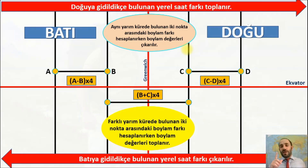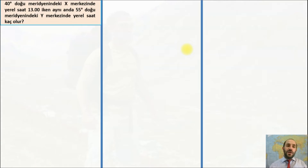Tarih değiştirme çizgisindeki durum biraz farklı; onu daha önce coğrafi koordinat sistemlerinde değindik. Burada sizinle 3 tane örnek problem üzerinde duracağız. Bakın: 40 derece doğu meridyenini vermiş ve bizden 55 derece doğu meridyenindeki saati istiyor. 40 derecede saat 13 iken 55 derece doğu meridyeninde saat kaçtır?